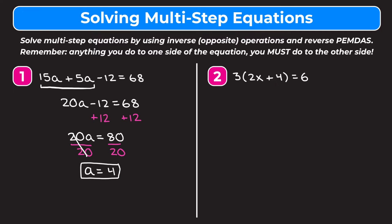Using reverse PEMDAS we want to get rid of the 3 first — we do multiplication before parentheses. So we divide both sides by 3. On the left the 3s cancel, leaving 2x plus 4. On the right 6 divided by 3 is 2. Now reverse PEMDAS tells us to get rid of the plus 4 first, so we subtract 4 from both sides. On the left we're left with 2x.